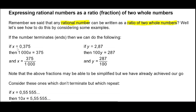If the number terminates, for example 0.375, we let that be x. We multiply by 1000 to turn it into a whole number. Remember, an equation is like a set of balances — we can do the same thing to both sides. So x is exactly the same as 375 over 1000.